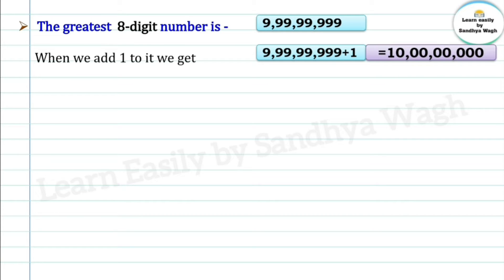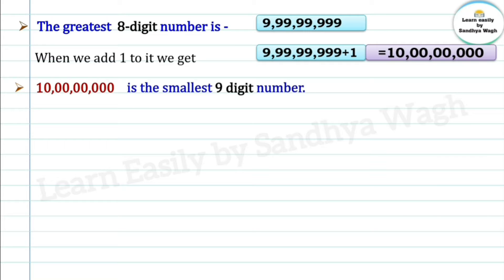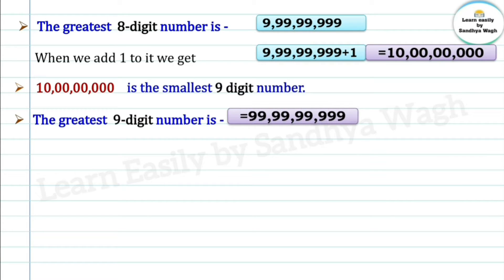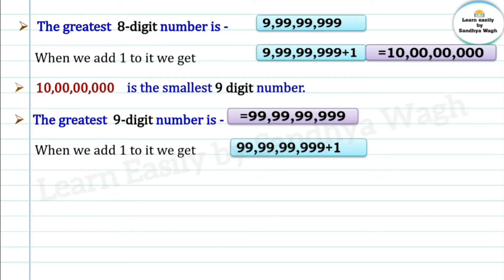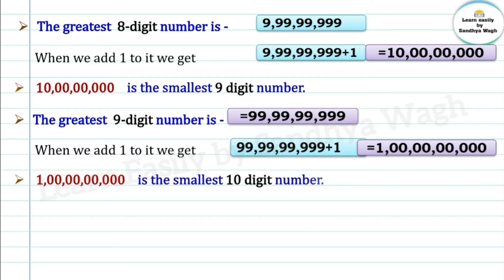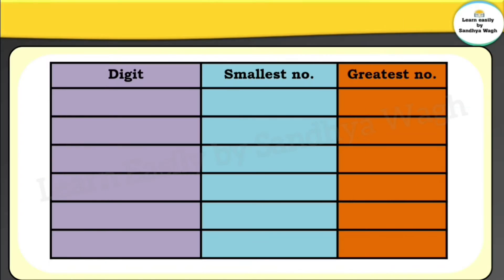When we add one to the greatest eight-digit number, we get one followed by eight zeros — that is the smallest nine-digit number. Nine nines is the greatest nine-digit number. When we add one to it, we get one followed by nine zeros, which is the smallest ten-digit number. We call it one abja.